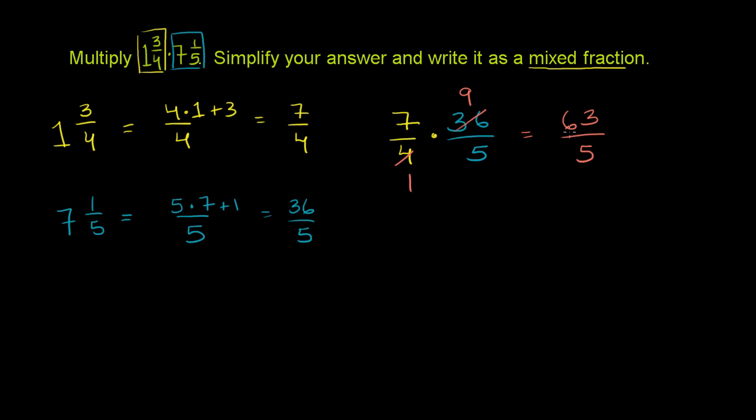So now we have our answer as an improper fraction. But they want it as a mixed number or as a mixed fraction. So what are 63 fifths? So to figure that out, let me pick a nice color here.